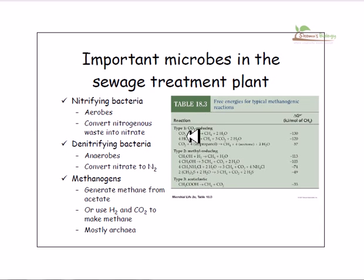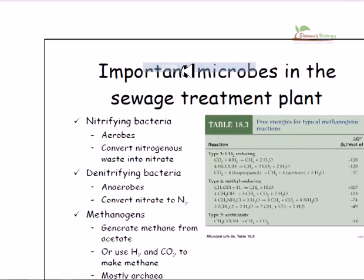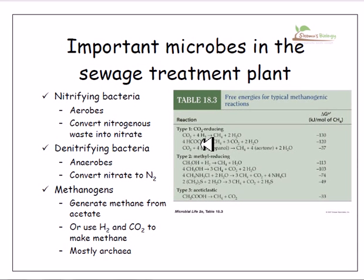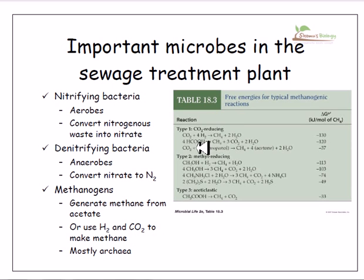There are three different types of methanogens shown in this picture. The first type is carbon dioxide-reducing bacteria, which utilize carbon dioxide and hydrogen to produce methane. The second type uses formic acid as a substrate to derive methane from it.